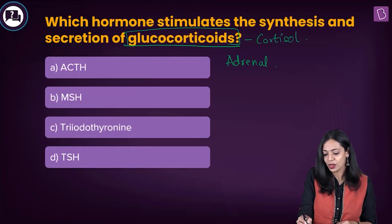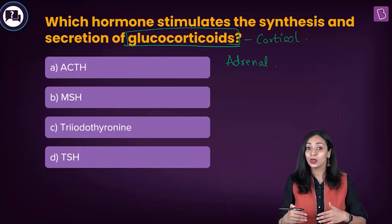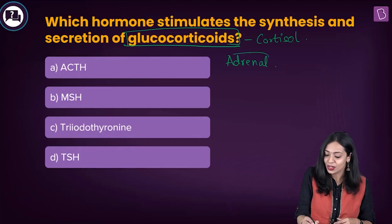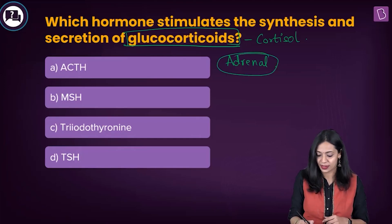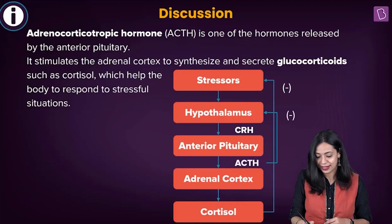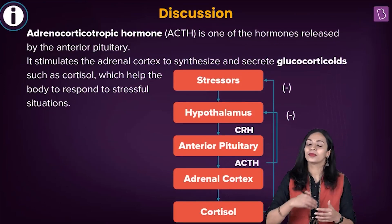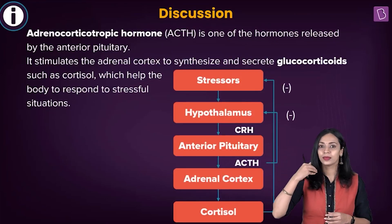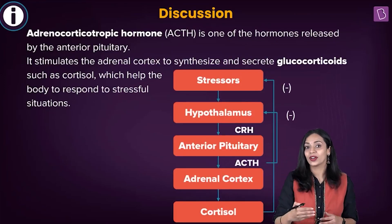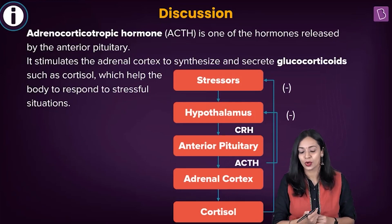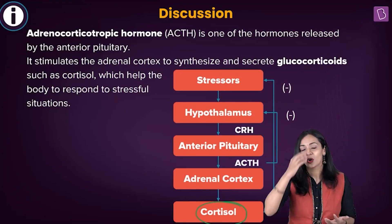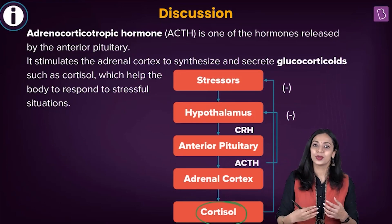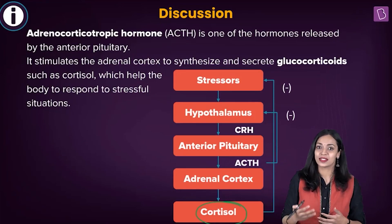We have to find out which of the given options stimulates the adrenal cortex to synthesize glucocorticoids. Cortisol is primarily a stress hormone — it is produced when we are stressed.